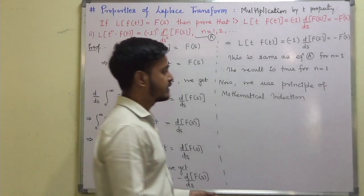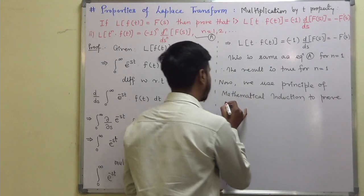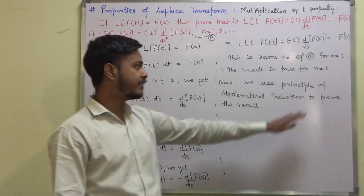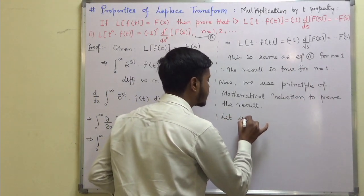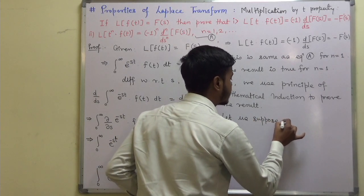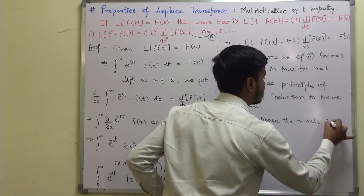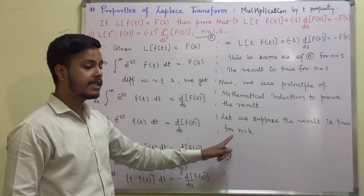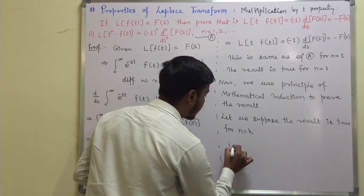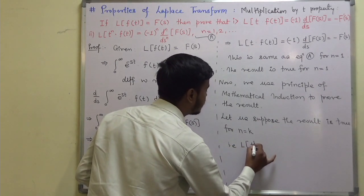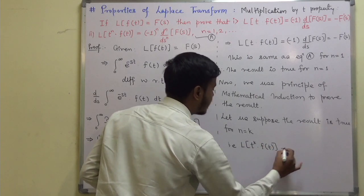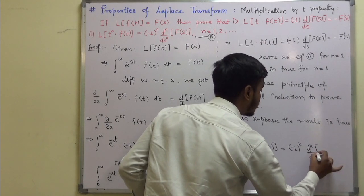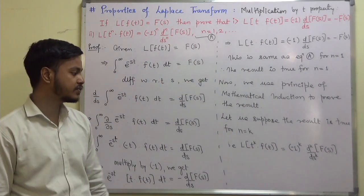We use the principle of mathematical induction to prove the result. Let us suppose the result is true for n=k, meaning the Laplace transform of t^k · f(t) equals (-1)^k times the kth order derivative with respect to s of F(s). This is our induction hypothesis, equation B.